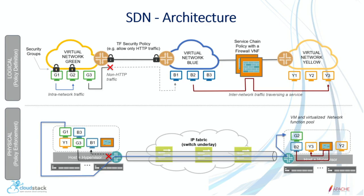On top we see the logical view: you have a green network, a blue network, traffic goes from A to B via some path. And here we can see the physical — how that's on your hosts, hypervisors, your entire IP fabric. When using SDN, that physical layer becomes invisible to the end user completely.